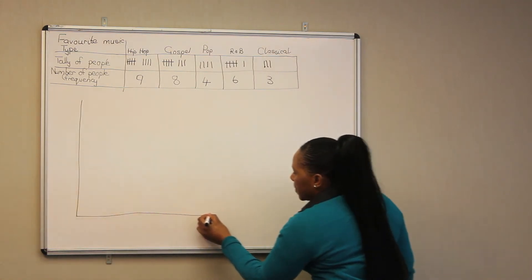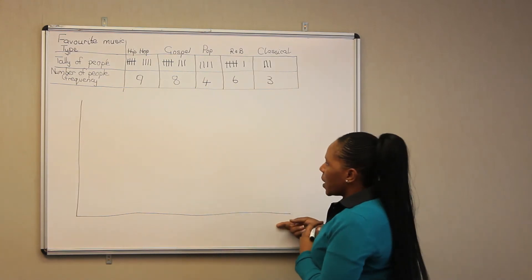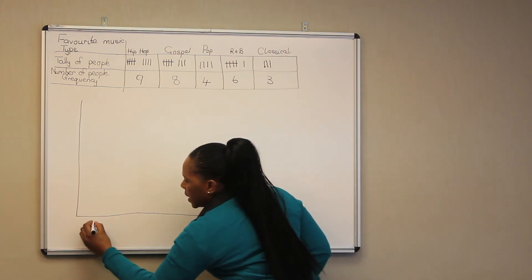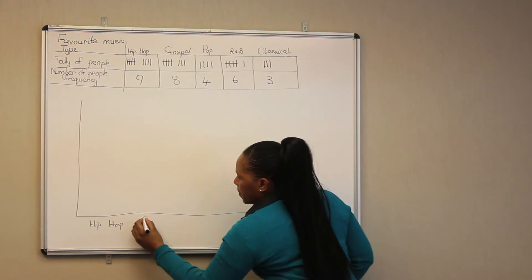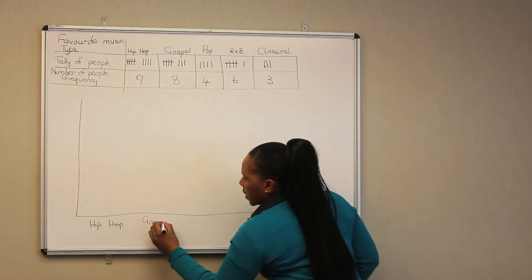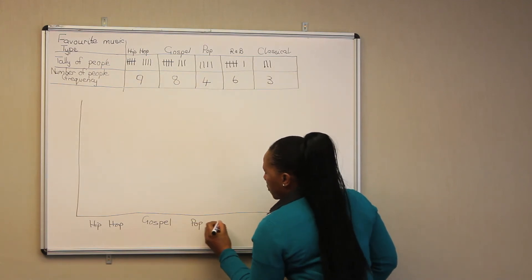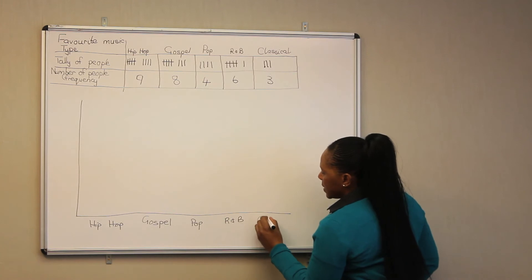Drawing the biograph, it's going to be something like that. At the bottom, we are going to have the different types of music. So here, we are going to have hip-hop, gospel, followed by pop, followed by R&B, and lastly, classical.